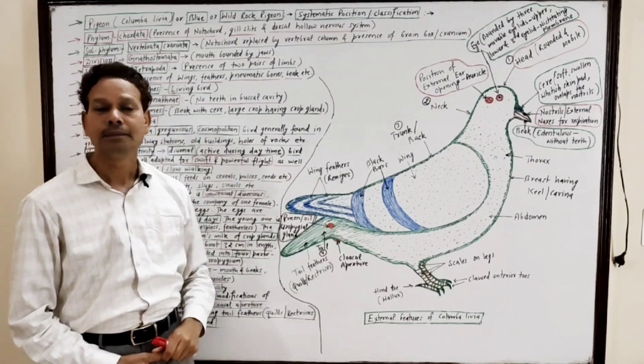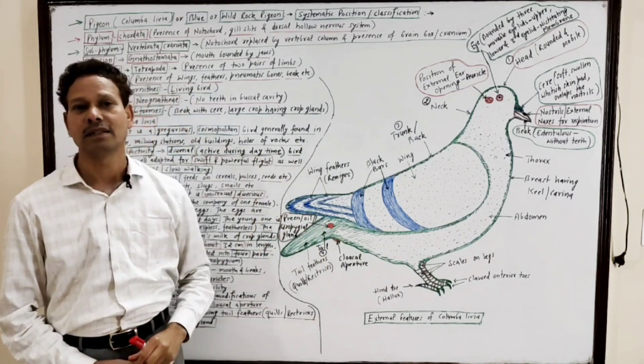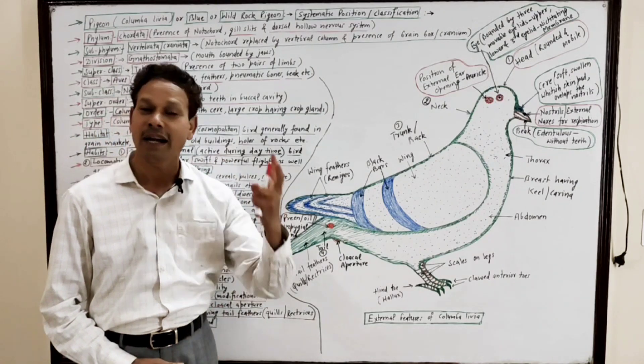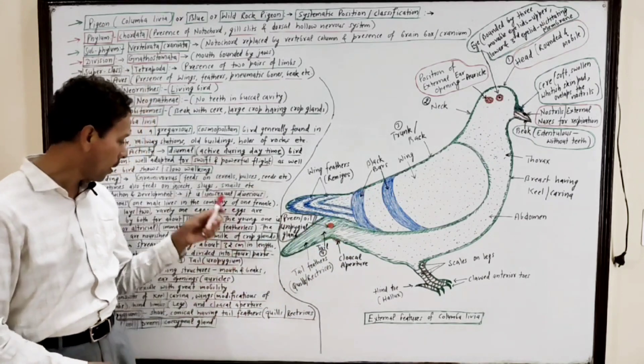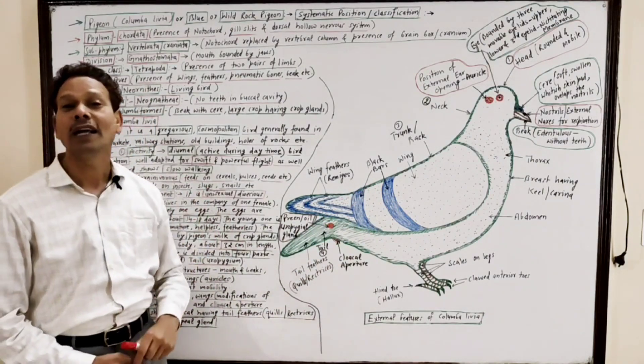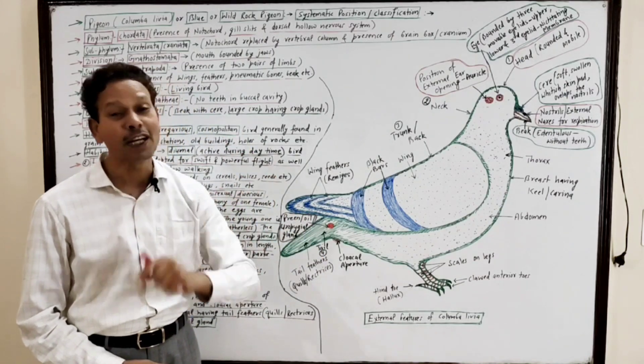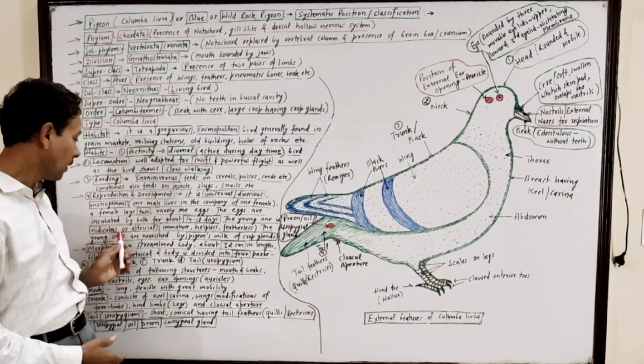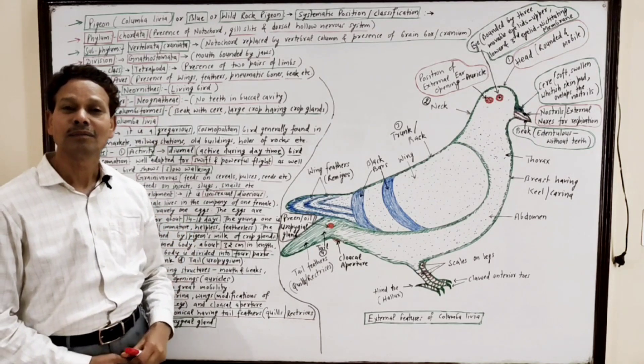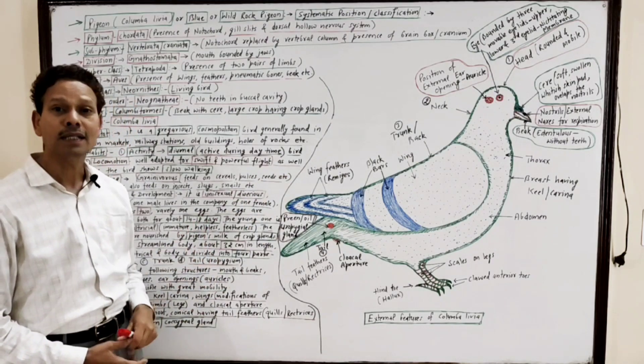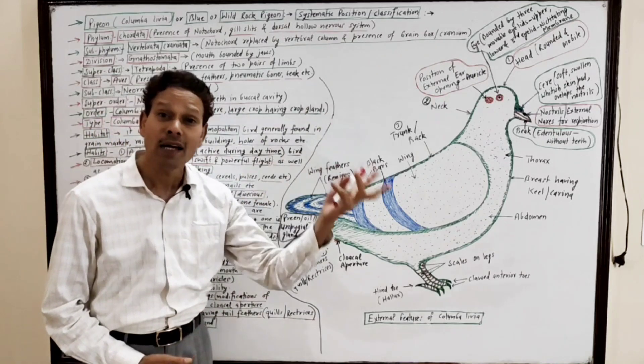A female lays generally two eggs, rarely one. Eggs are incubated by both parents for about 14 to 18 days. The young one is nidicolous, the young one is altricial, meaning the young one is immature, helpless, and featherless, that requires parental care.